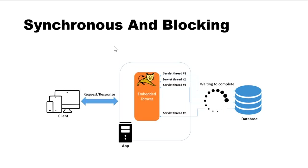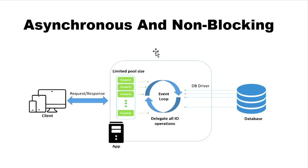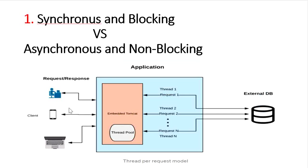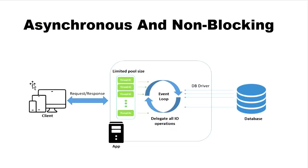Reactive programming came into the picture to improve application performance by supporting asynchronous and non-blocking architecture. In the synchronous model, each request is assigned to one thread — the thread-per-request model. With the asynchronous and non-blocking architecture provided by reactive programming, we still have a limited thread pool, but these threads do not follow the request-per-thread model. When a request comes in and is assigned to thread one, that thread goes to the database to fetch data.